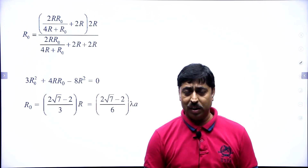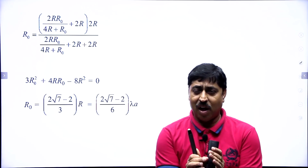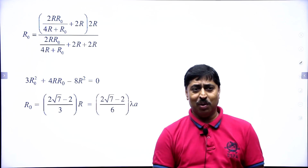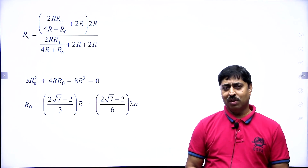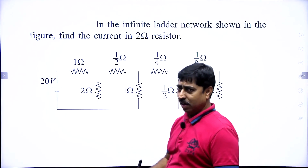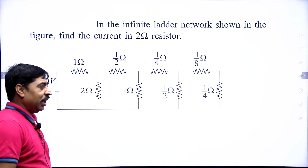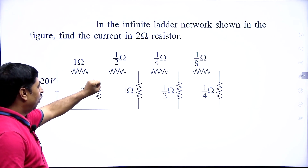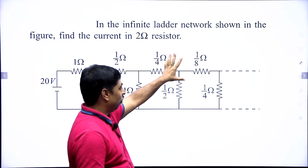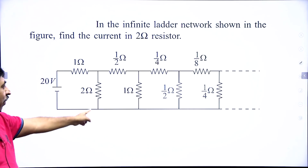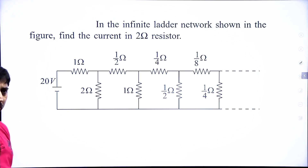I hope all of you have understood this. Now I am giving you a question you can do on your own — it is rather simple if you have followed this explanation. This is again an infinite ladder network. The resistances are: 1 ohm, 2 ohm, 1/2 ohm, 1 ohm, 1/4 ohm, 1/2 ohm, 1/8 ohm, 1/4 ohm, and so on to infinity. There is a 20-volt battery. Find the current in the particular 2-ohm resistance. I am stepping out of the frame; capture the question and give it a try.